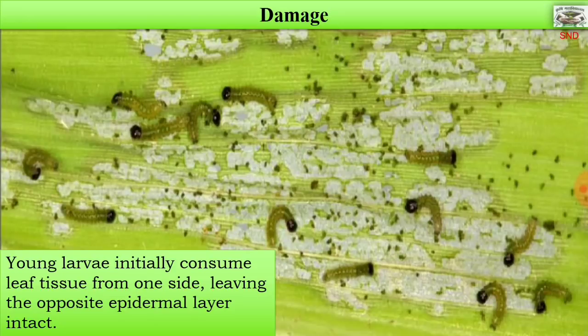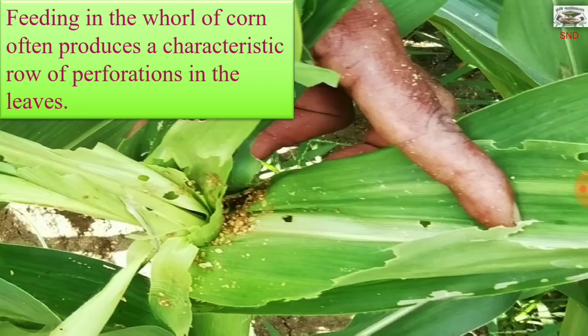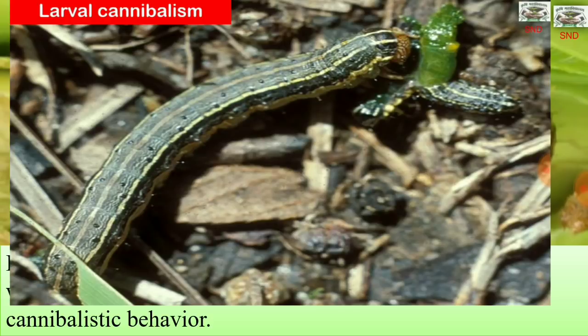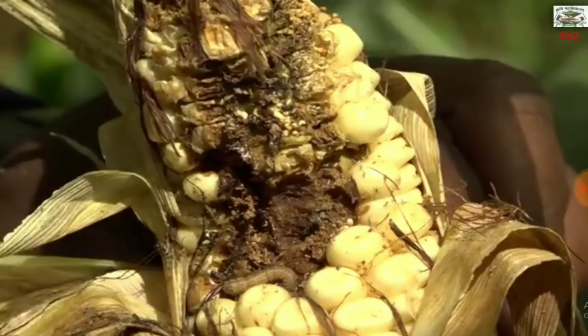The damage: young larvae initially consume leaf tissue from one side, leaving the opposite epidermal layer intact. By the second or third instar, larvae begin to make holes in the leaves and eat from the edge inwards. Feeding in the whorl of corn often produces a characteristic row of perforations in the leaves. Larval densities are usually reduced to 1-2 per plant due to cannibalistic behavior. The maize cob is also damaged very badly by this army worm.